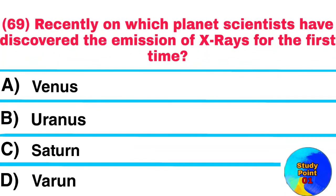Question No. 69. Recently on which planet have scientists discovered the emission of X-rays for the first time? Answer: Uranus.